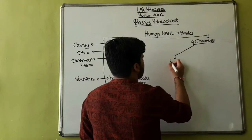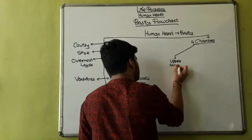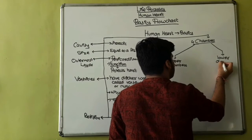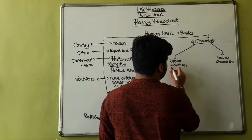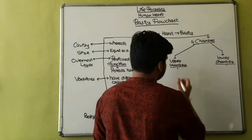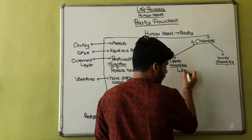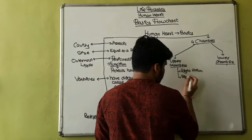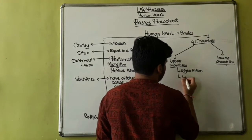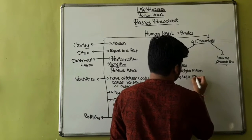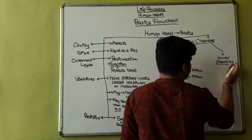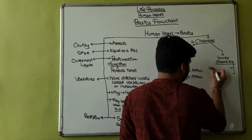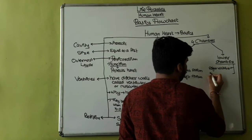Four chambers which is divided into upper chambers and lower chambers. The upper chambers are right atrium and left atrium.